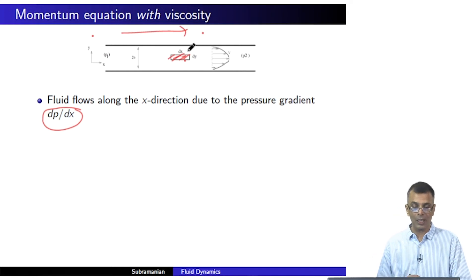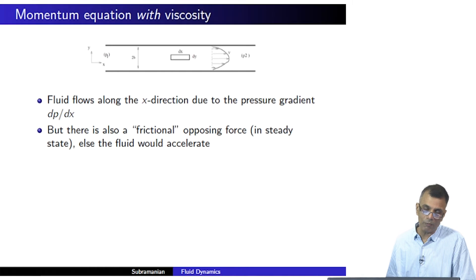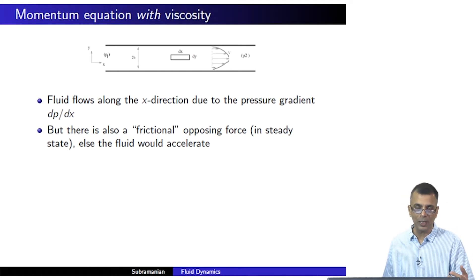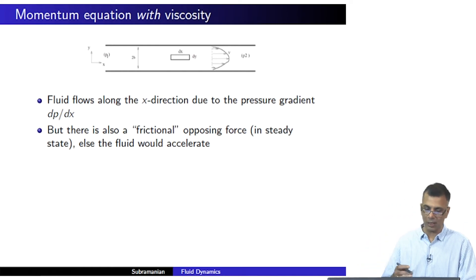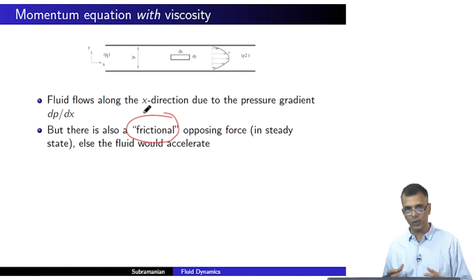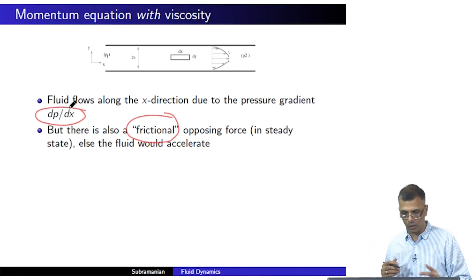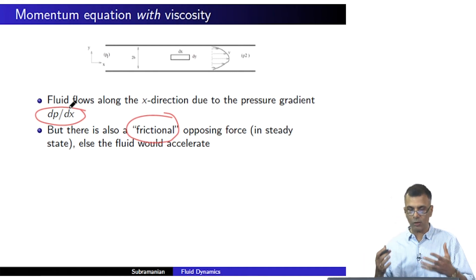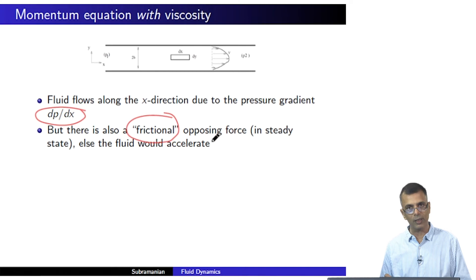That other force has to be something related to viscosity. Intuitively, viscosity has to do with friction and heating — viscous effects contribute to heating, which is generally associated with friction. So in that sense, there is also a frictional opposing force. The pressure gradient force is what drives the flow from left to right, and the frictional opposing force balances it in steady state, because otherwise the fluid element would accelerate.